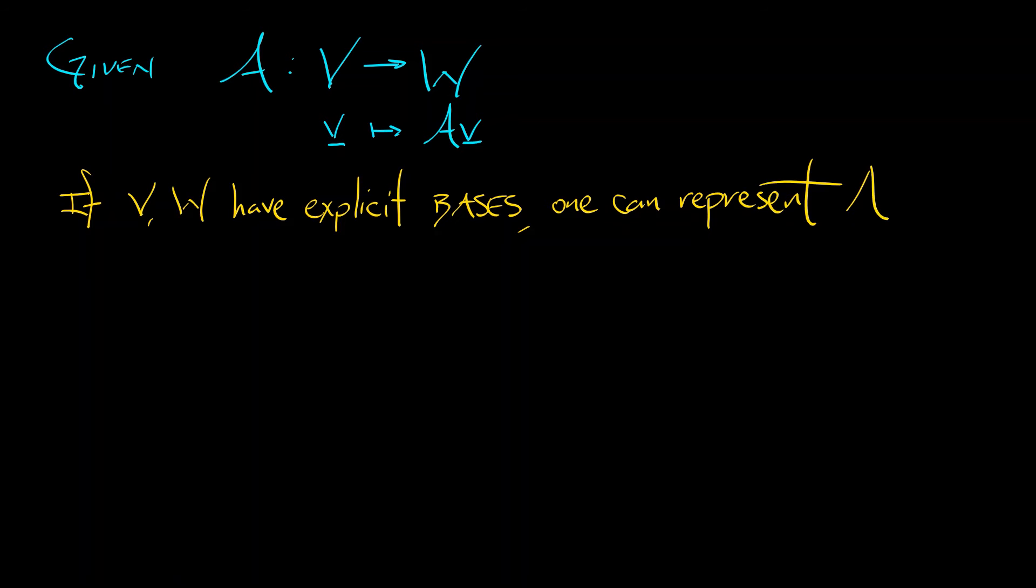So let's say that you are given a linear transformation A from vector space V to vector space W. It takes a vector little v in big V to what we write as A times v. We put the vector on the right and the linear transformation on the left, kind of like we do with functions. Now here's the thing, if your vector spaces V and W have explicit bases, then one can represent the linear transformation as a sort of a two dimensional array where you have explicit coordinates for what goes to what. Of course, that is a matrix.